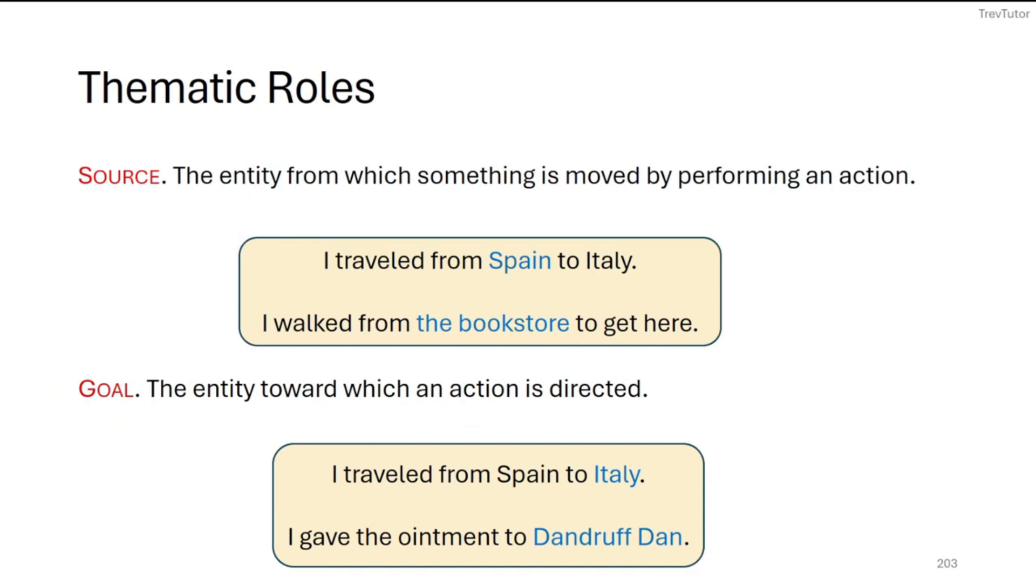Now in terms of direction and location, we have source and goal. Source and goal are kind of like opposites of each other. Sources are where things are coming from, where the action is coming from, and goals are where the action is going. So when we say I traveled from Spain to Italy, from Spain—Spain in this case is the source, that's where you're coming from—and to Italy, Italy is the goal, that's where you're headed. I walked from the bookstore to get here, so we're walking from a location, we're walking from a source. And I gave the ointment to Dandruff Dan. Well, in this case, Dandruff Dan is the thing that is being transferred to. It might even be better in this case to call it a recipient rather than a goal.